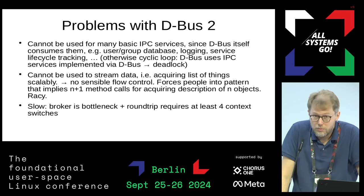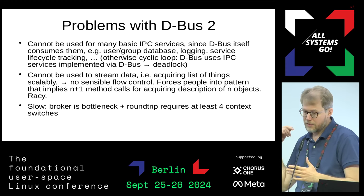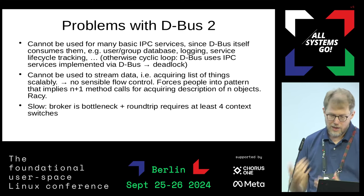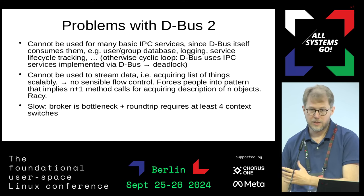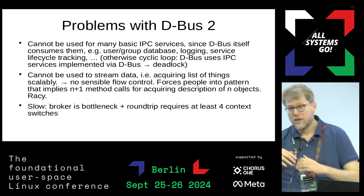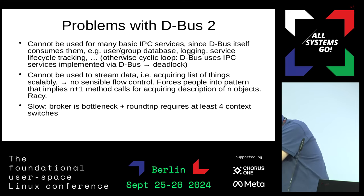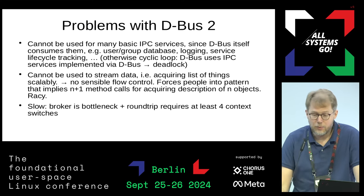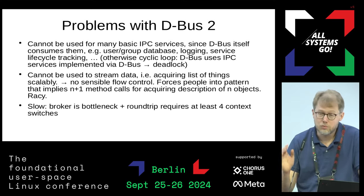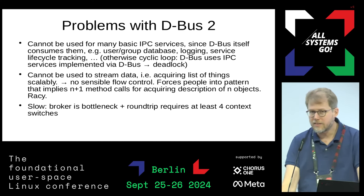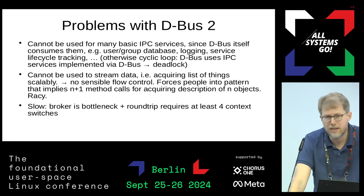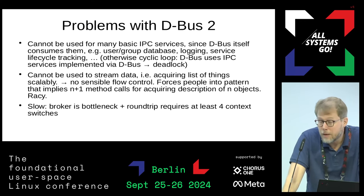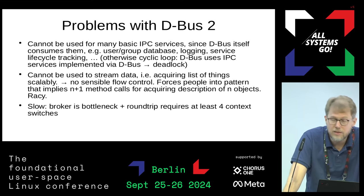DBus is also slow. In DBus, every message from any process to any other process always goes through the broker. This means every roundtrip requires four context switches: from the sender to the broker, from the broker to the recipient, from the recipient to the broker, and from the broker back to the client. These roundtrips are awful. People misunderstand what actually makes the system slow - it's the roundtrips that kill everything, not the time spent on additional marshalling.